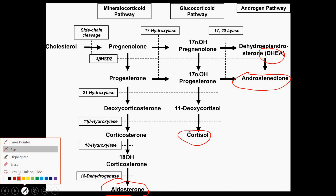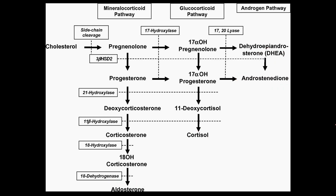Different hormones are produced in the adrenal medulla. Those are the catecholamines, and those are produced by chromaffin cells. So chromaffin cells in the adrenal medulla are going to produce our catecholamines — epinephrine and norepinephrine. Different cells in the adrenal cortex are going to produce aldosterone, cortisol, and our sex steroids.